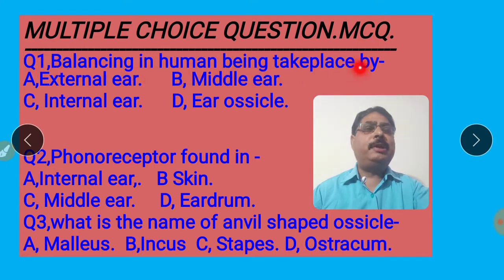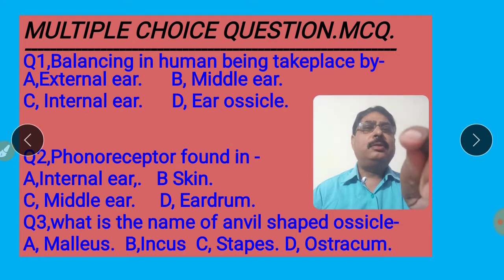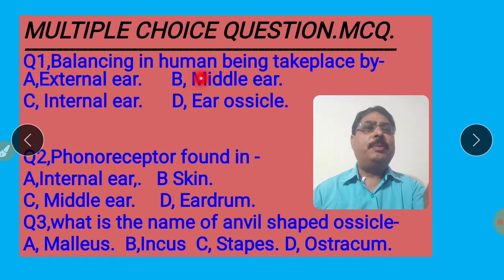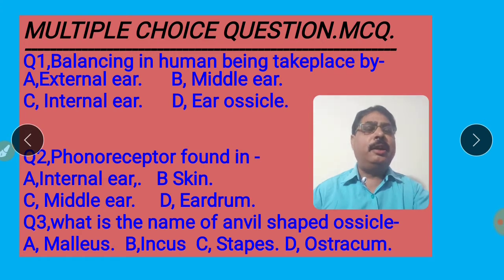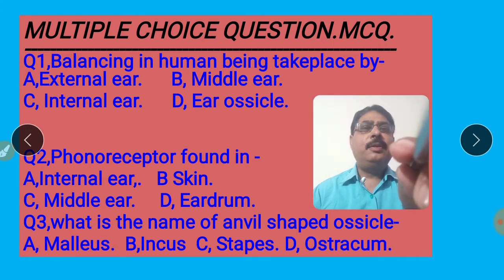Balancing in human beings takes place by... The right answer is option C. I shall click option C for the right answer.